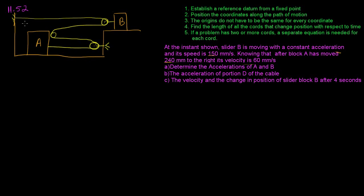This is pulley problem homework 11.52. The problem has a single string over three different pulleys connected to two different blocks. At the instance shown, slider B is moving with a constant acceleration and has a speed of 150 millimeters per second. After block A has moved 240 millimeters to the right its velocity is 60 millimeters per second. We need to determine the accelerations of blocks A and B, the acceleration of portion D of the cable, and the velocity and change of position of slider B after four seconds.